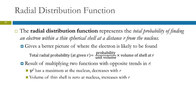So these give opposite trends in r, because when r is very small, then the volume is very low. And the result of that is that psi squared has a maximum at the nucleus and decreases with r, but the volume of the thin shell is zero at the nucleus. And so we get a different shape.